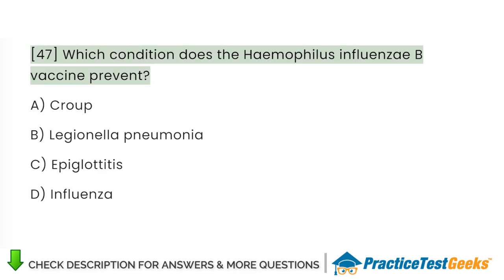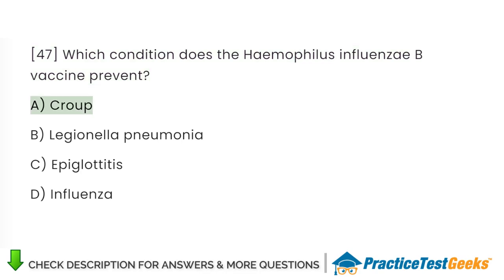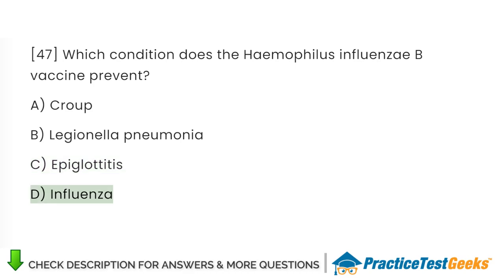Which condition does the Haemophilus influenzae B vaccine prevent? A. Croup. B. Legionella pneumonia. C. Epiglottitis. D. Influenza.